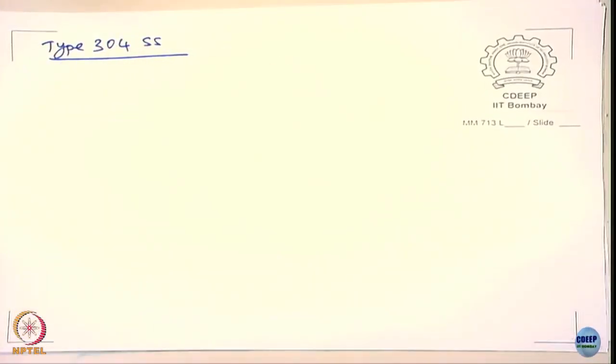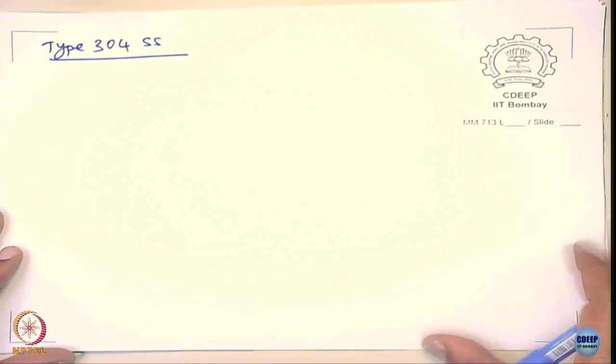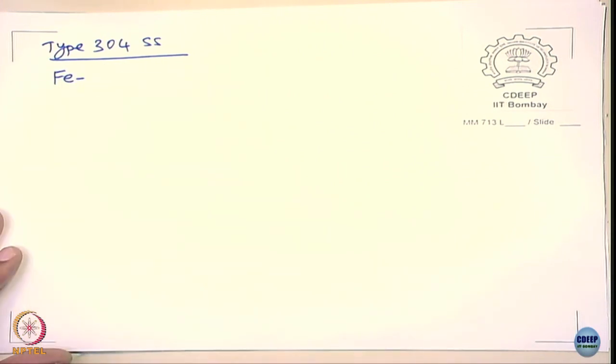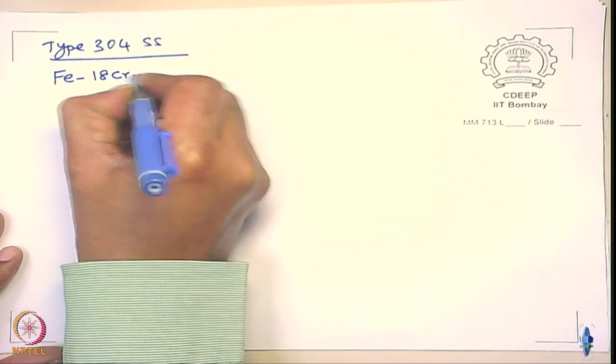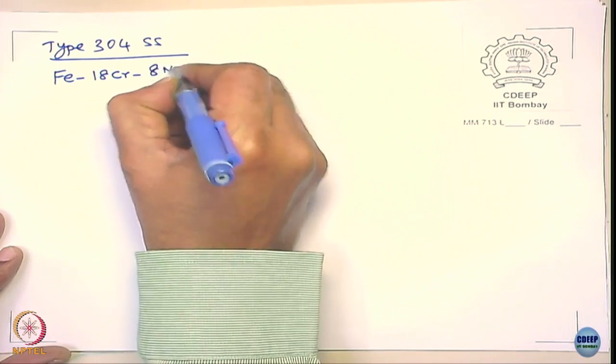Let us now discuss the sensitization of stainless steels. Before discussing sensitization, we need to understand the stainless steel composition, especially the austenitic grade. Let us start with type 304 stainless steel. The major alloying elements are iron, 18% chromium, and 8% nickel. The carbon content is 0.08 weight percent. There are also manganese and trace elements of silicon, sulfur, and phosphorus.